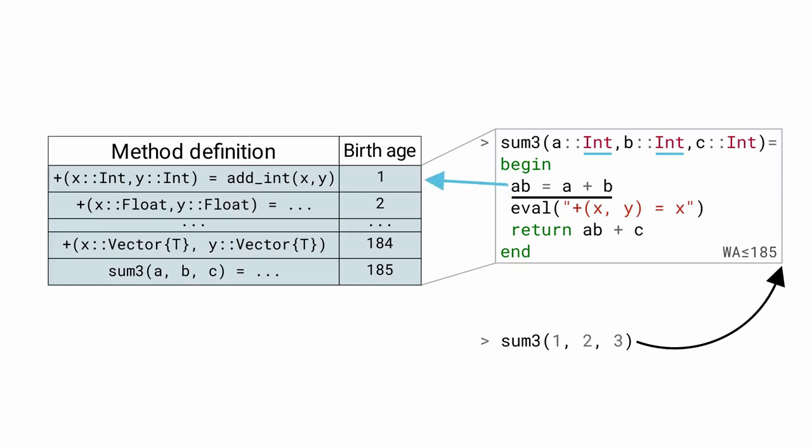Therefore, we can avoid dynamic dispatch in plus and inline it. And because of the world age, in spite of calling eval in sum3, the second call to plus in ab plus c can be inlined as well. This mechanism, inlining based on type specialization enabled by world age, provides much of Julia's performance.